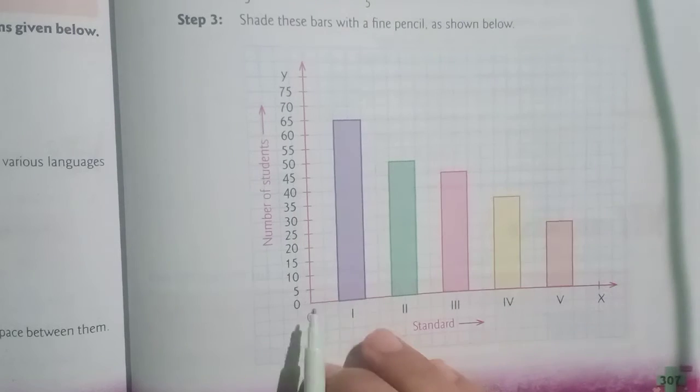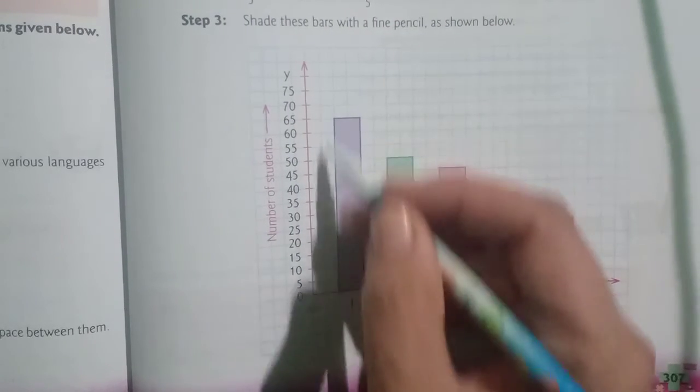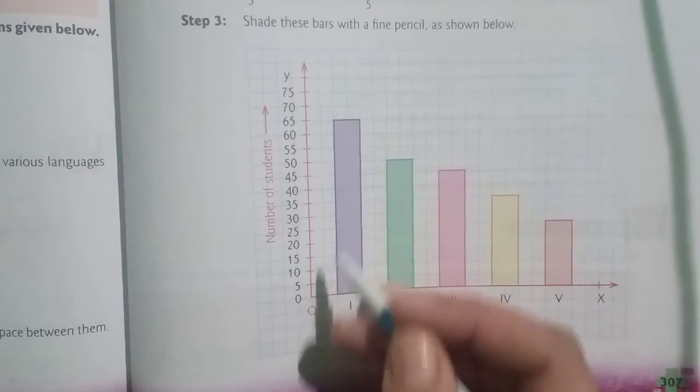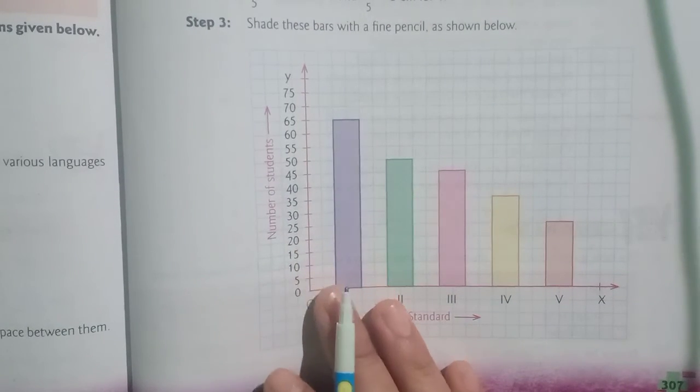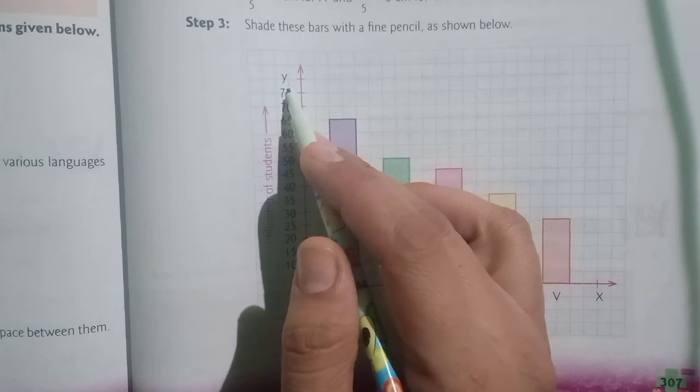This one, the straight line, will be OY, the vertical line or Y-axis, as written over here.